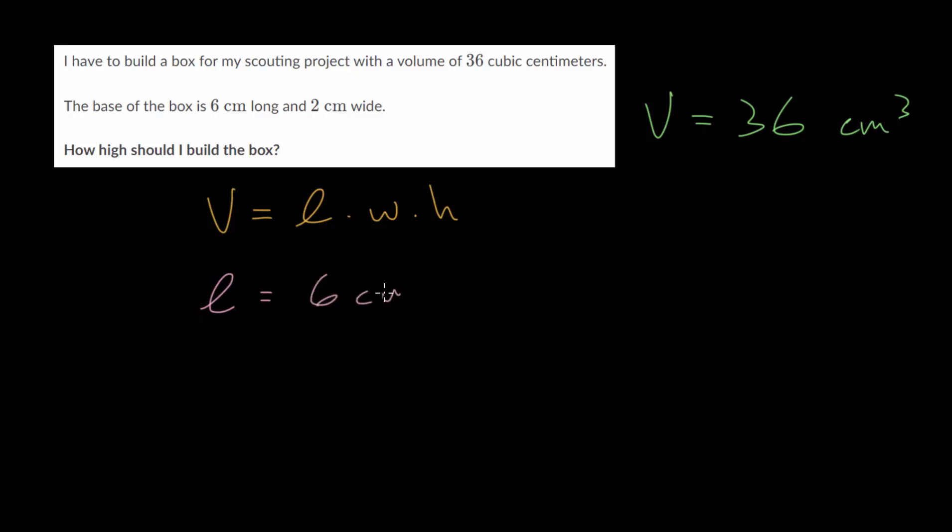We know the volume formula is the length multiplied by the width multiplied by the height. We're told in this case that the length l is 6 centimeters, the width w is 2 centimeters, and we need to find the height since we want to know how high the box should be built. So we know V, we know l and w, and so we can plug all these in and then figure out what h would have to be.